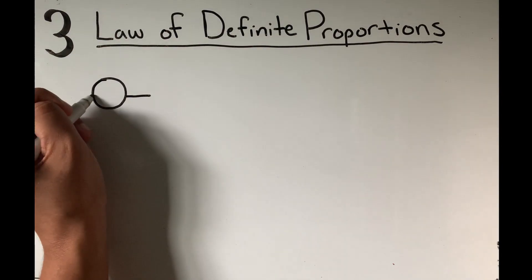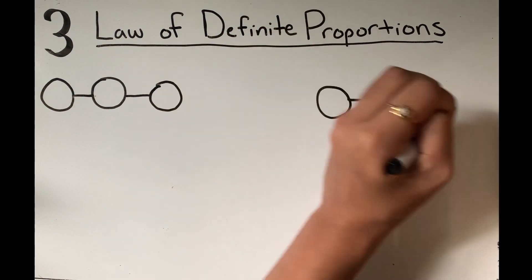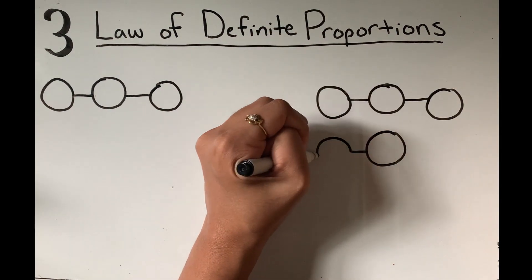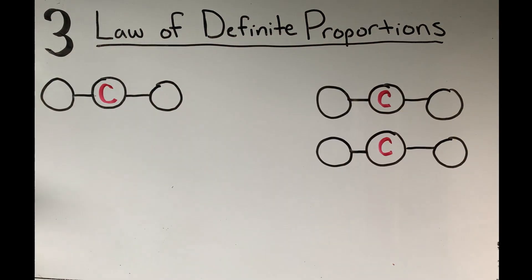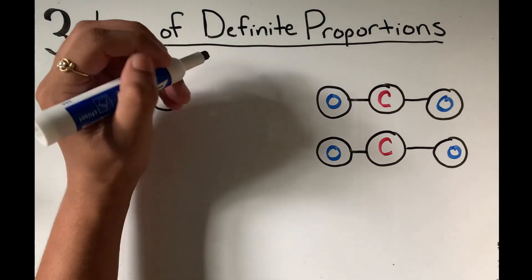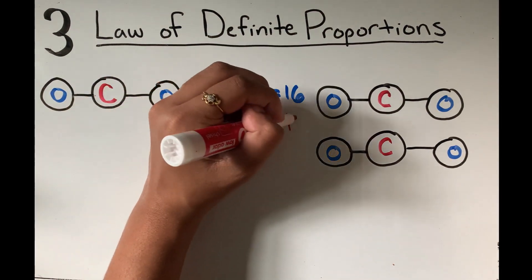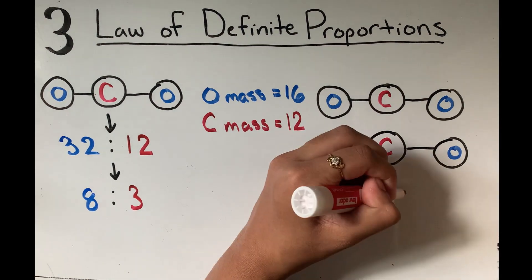To understand the law of definite proportions, we can look at carbon dioxide or CO2. No matter how many carbon and oxygen atoms there are, there always has to be two oxygen atoms for every carbon atom. Since atoms of an element also have a consistent mass, the masses of the atoms have a consistent proportion as well.